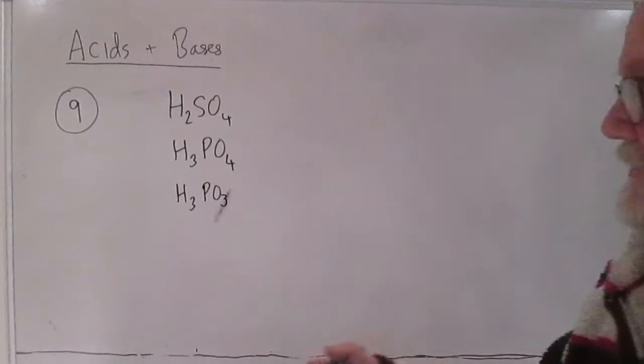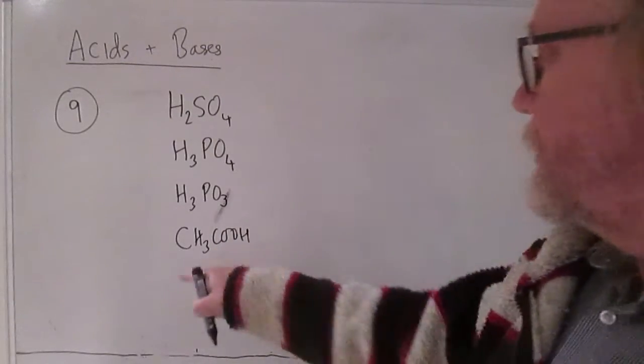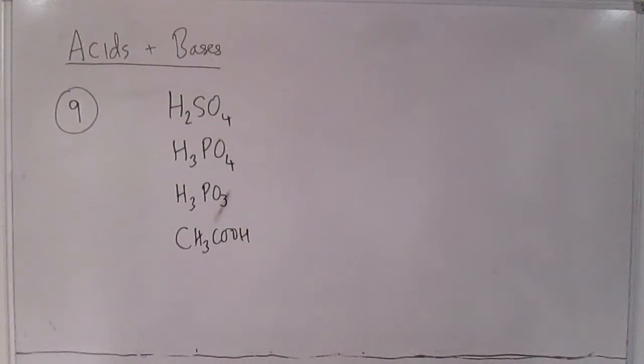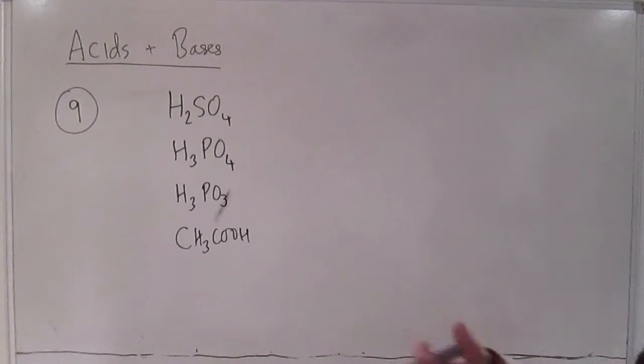And of course an obvious example where the same is true is that ethanoic acid has four hydrogens but it's a monobasic acid because only that one is acidic. So it's not necessarily equal to the number of hydrogens in the molecule but it's the number of ionizable ones, the number that can be released as H plus ions.